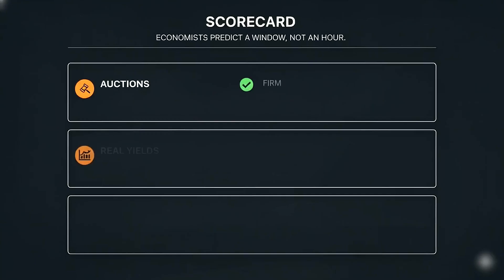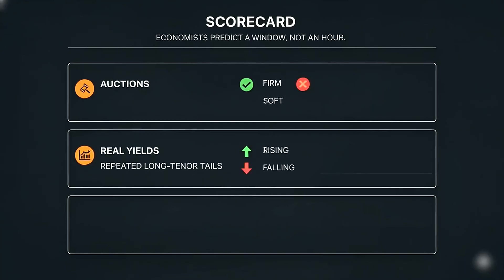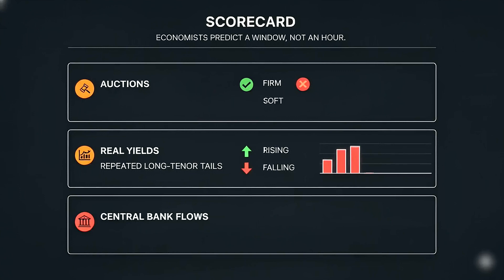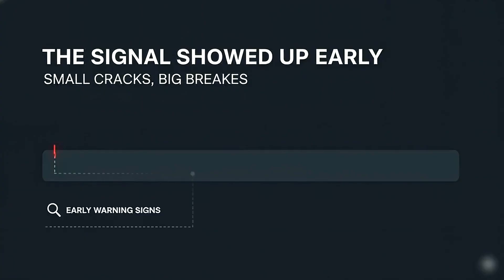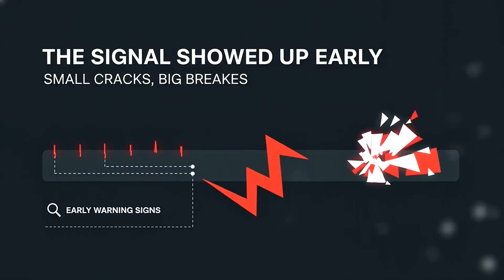Scorecard before we close. Auctions: firm or soft. Real yields: rising or falling. Central bank flows: adding or pausing. Economists predict a window, not an hour. The signal showed up early. Small cracks. Big breaks.